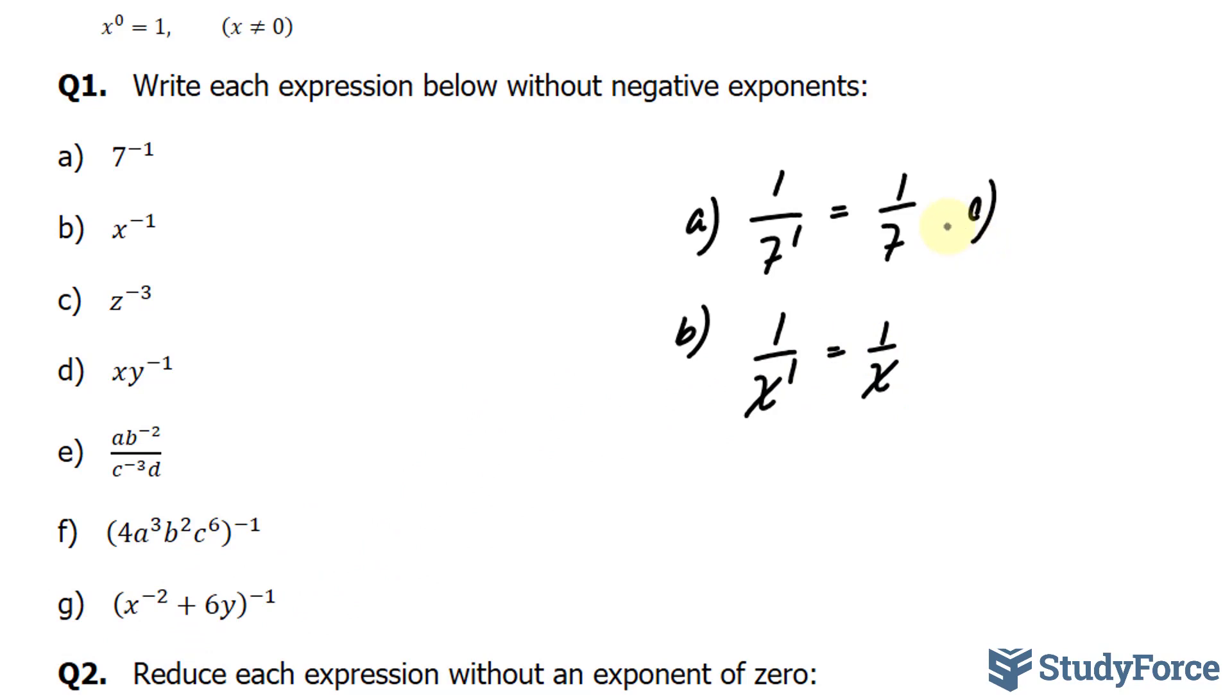In question C, we have z to the power of negative 3. This becomes 1 over z, and instead of negative 3, it's the power of positive 3.